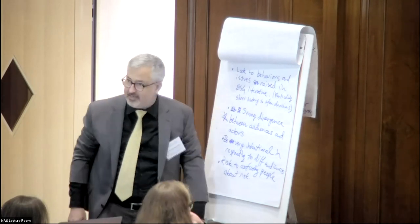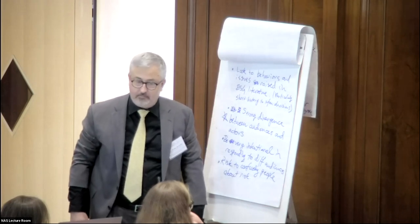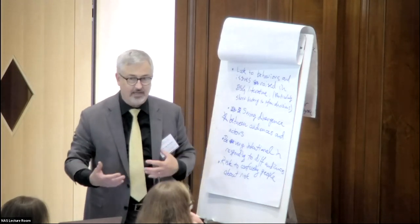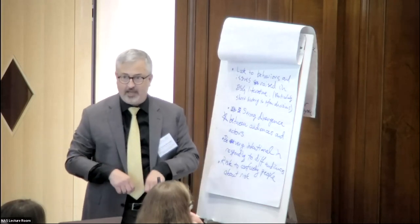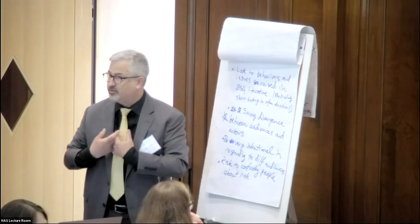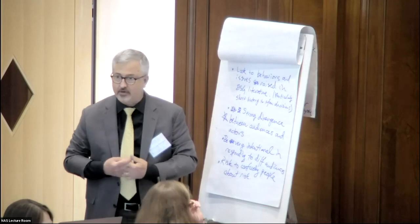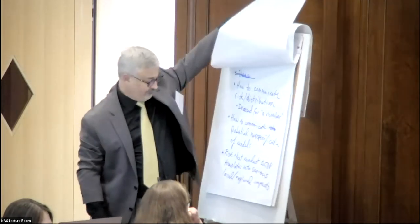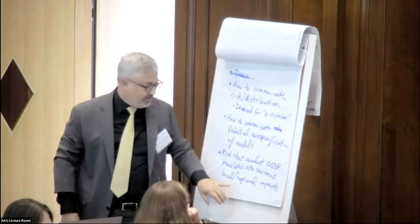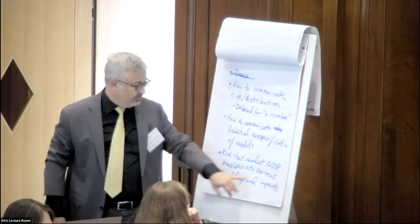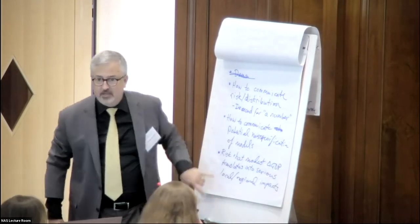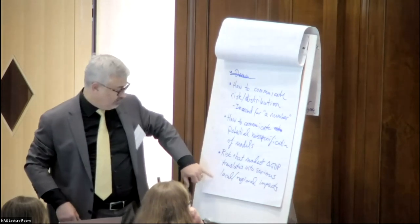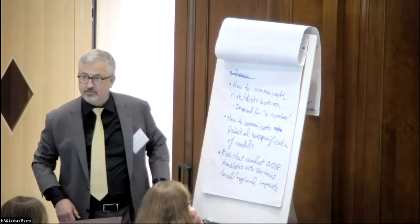There's a strong divergence between audiences and actors — communicating these risks is vulnerable to very different reactions. As Rachel Cletus emphasized earlier, there's a risk in talking about risk because people don't understand it. And one other thing to mention: there is a risk that modest GDP deltas translate into serious local and regional impacts. So this is just a key issue for interpreting models.